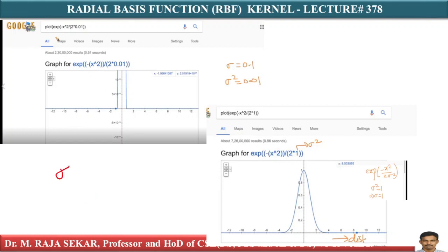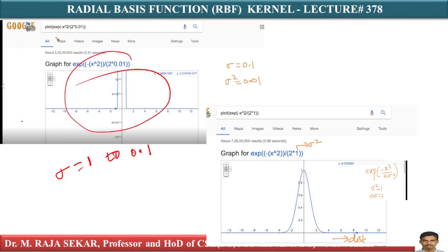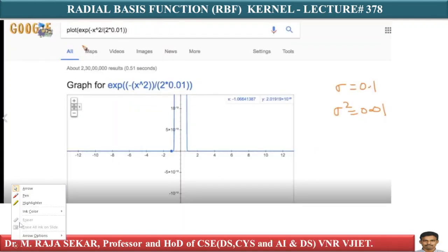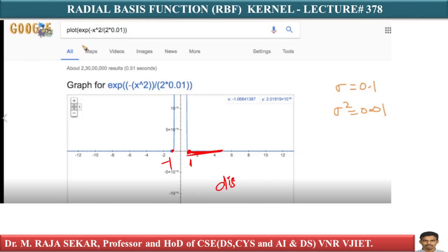If I reduce sigma from one to 0.1, this is the graph related to sigma equal to 0.1. Let me go back to the previous slide. This is sigma equal to one — the RBF graph says: this distance is one, this is minus one. If distance is greater than one, your kernel value is zero.